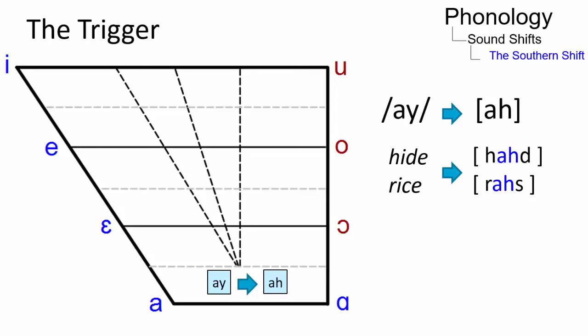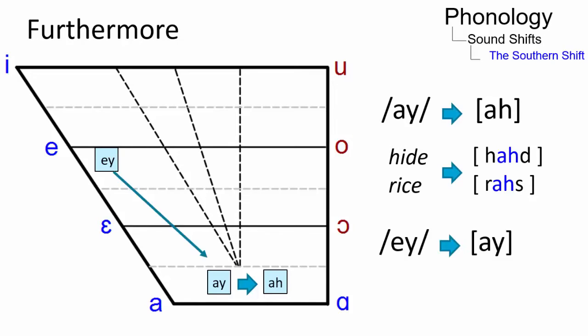Furthermore, the onset of the mid-front vowel A is lowered and centralized to I, so that slate sounds more like slide.